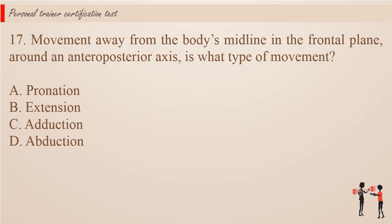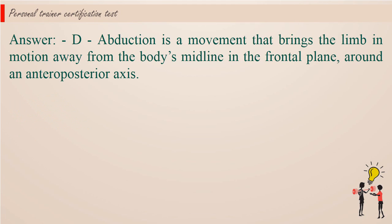Question 17. Movement away from the body's midline in the frontal plane, around an anteroposterior axis, is what type of movement? a. Pronation. b. Extension. c. Abduction. d. Abduction. Answer: abduction is a movement that brings the limb in motion away from the body's midline in the frontal plane, around an anteroposterior axis.